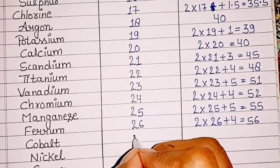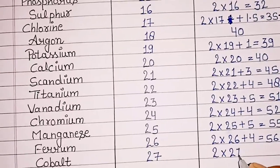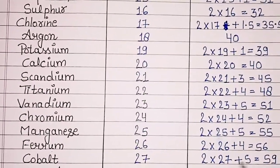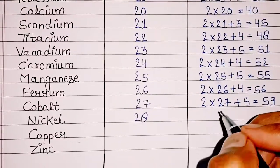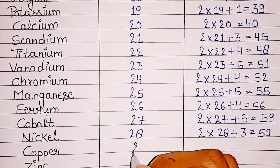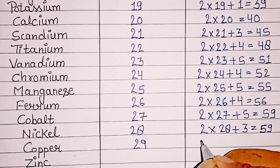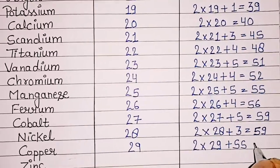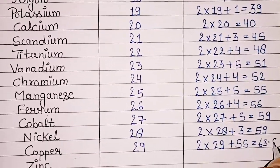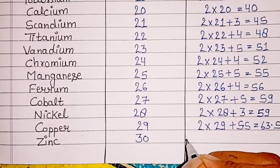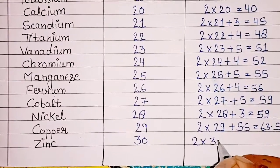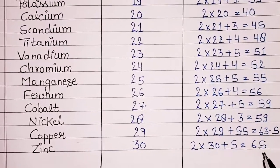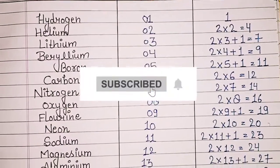Cobalt: atomic number 27, mass number 2 x 27 + 5 = 59. Nickel: atomic number 28. Copper: atomic number 29, mass number 2 x 29 + 5 = 63.5. Zinc: atomic number 30, mass number 2 x 30 + 5 = 65.